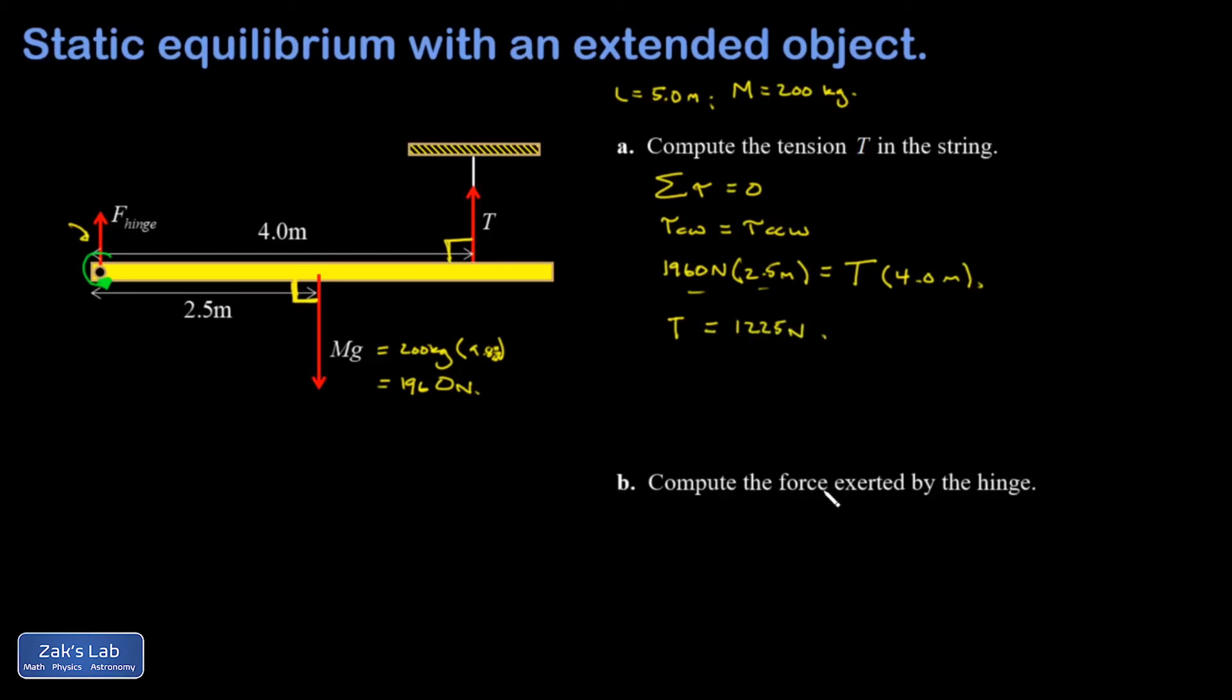In part b, I want to get the force exerted by the hinge, so I need to have some equation that actually involves that hinge force. First off, it definitely has no horizontal component because I've mapped out every other force in the problem and they're all vertical. If the hinge had a horizontal component to its force, the whole system would start to accelerate horizontally.